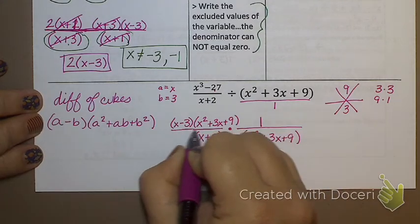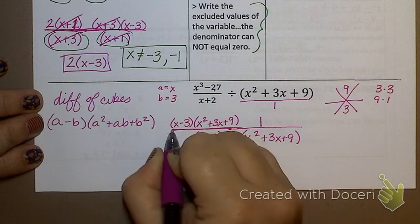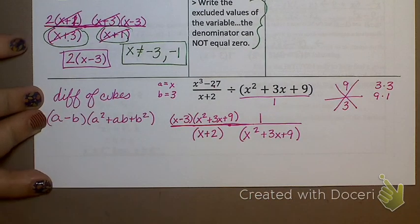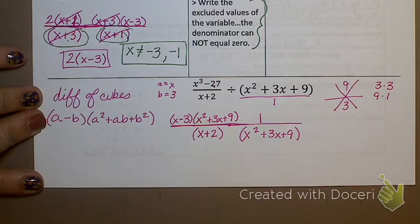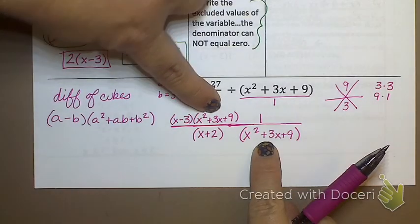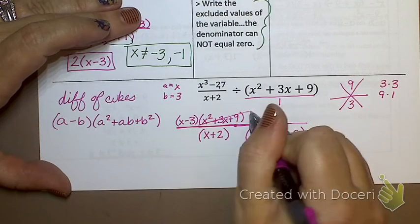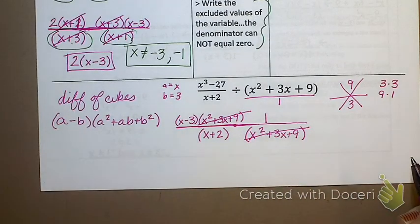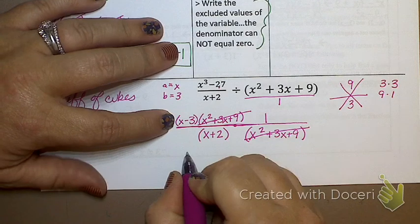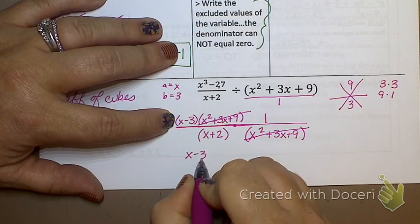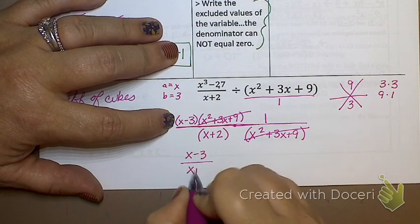And as I make my giant fraction here, what do you notice? What cancels? Don't those two match? So even though they're ugly, they match. So they'll cancel. Does anything else cancel? No. Now, x minus 3 on top, and x plus 2 on the bottom. Both of those are in parentheses.